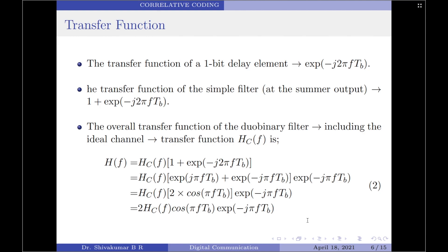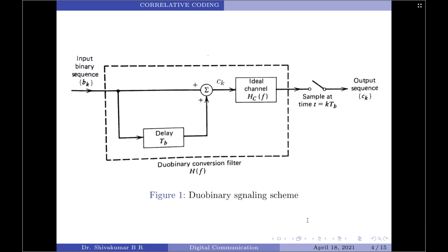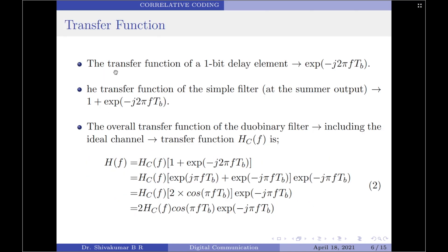Let us now move on to the mathematical aspect. Let us find the transfer function of the duobinary filter. The block shown with discontinuous lines is the duobinary conversion filter — the simple filter and the ideal channel cascaded together form this filter. The duobinary conversion filter has a transfer function H(f). The transfer function of the 1-bit delay element is given by e^(−j2πf·Tb).